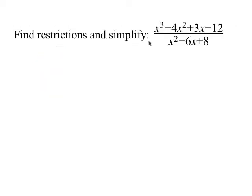Find the restrictions and simplify this rational expression. First I'm going to simplify and then find restrictions. To simplify, we have to factor the top and factor the bottom so that we can hopefully cancel something out. For the top, we're going to use grouping — taking two groups and factoring out a GCF.